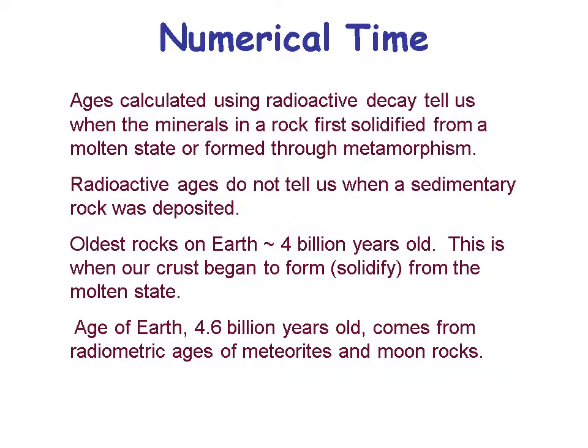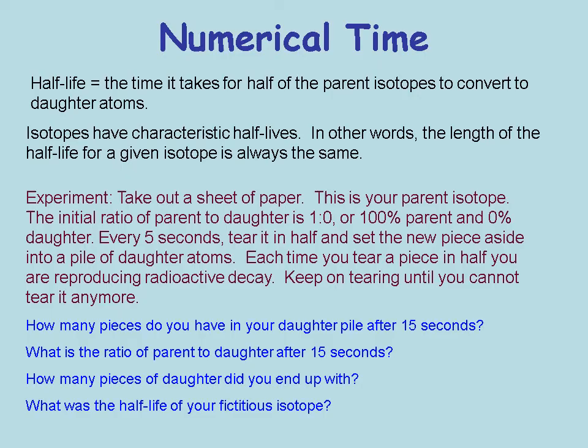The oldest rocks on Earth are four billion years old — this is when our crust began to solidify from a molten state. The age of the Earth is about 4.6 billion years old, derived from radiometric ages of meteorites and moon rocks. An important term is half-life: the time it takes for half of the parent isotope to convert to daughter isotopes, and then another half for the next cycle. Isotopes have characteristic half-lives — the length of a half-life for a given isotope is always the same.